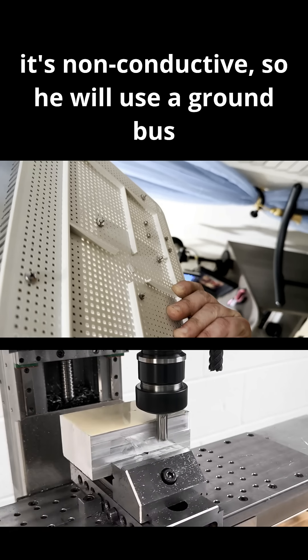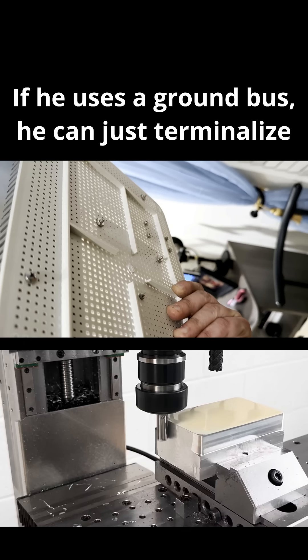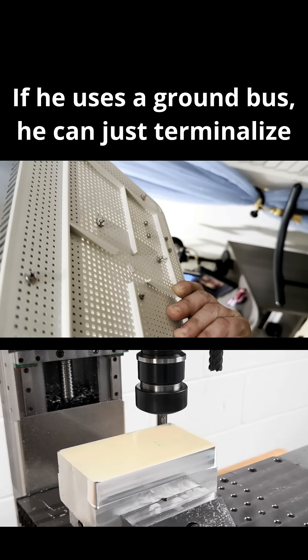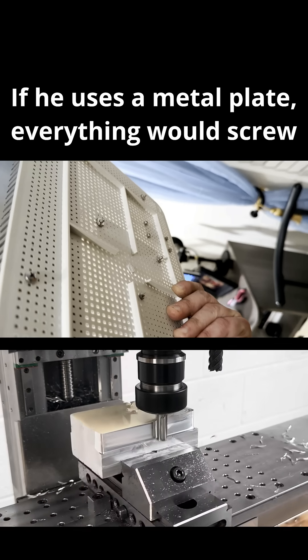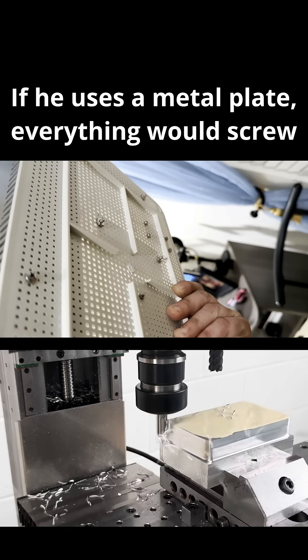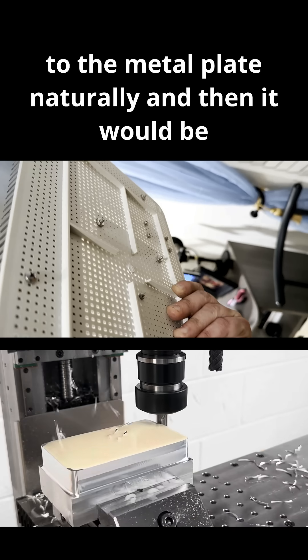So he will use a ground bus or a metal plate. If he uses a ground bus, he can just terminalize everything right off the ground bus. If he uses a metal plate, everything would screw to the metal plate naturally and then it would be grounded.